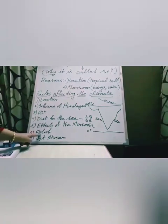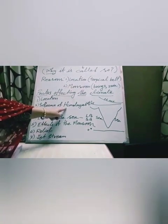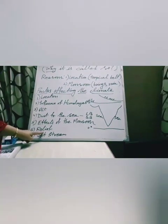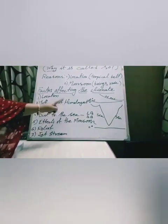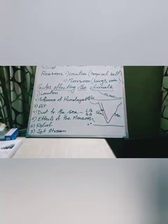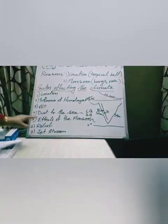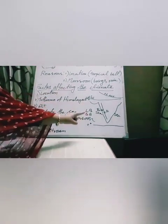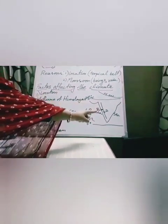Factor six is relief. Relief not only affects temperature, it also affects rainfall. For example, the Western Ghats — the western side receives huge rainfall, but the eastern side is completely dry. Why? Because of the presence of this mountain. That's why relief is one of the factors. The part of the mountain that gets heavy rain has comparatively lower temperature, but the opposite side is dry with comparatively higher temperature.